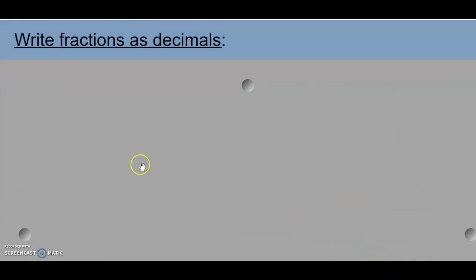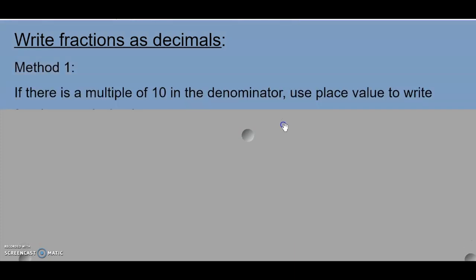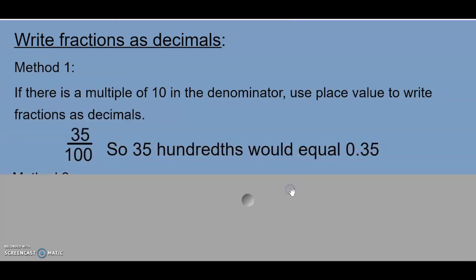Today, we are going to look at writing fractions as decimals using two different methods. Our first method is if there is a multiple of 10 in the denominator, we can use place value to write the fraction as a decimal. For example, 35 hundredths would be equal to 0.35, since 100 is a multiple of 10 and it is one of our place values that we use when writing decimals.